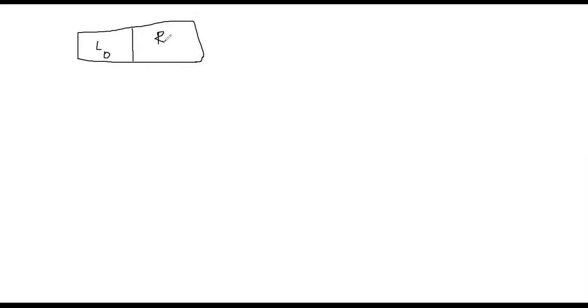Let's suppose we have a Feistel network. Let me draw only two rounds because that's what I'm going to talk about. We split the data into two parts — this is our raw data that we would like to encrypt. We split it in two halves, calling them L0 and R0. For a modern block cipher it's usually 128 bits, meaning 16 bytes total — eight bytes on each side.